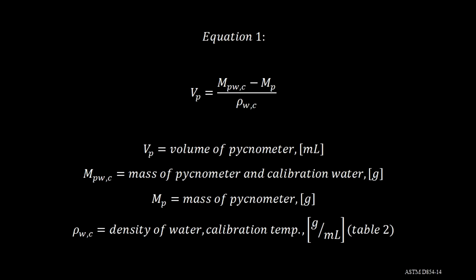As shown in Equation 1, the volume of the pycnometer equals the mass of the pycnometer and calibration water minus the mass of the pycnometer, divided by the density of the water at the calibration temperature.